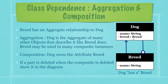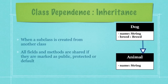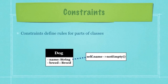The final level of dependence is inheritance, which represents a very tightly coupled relationship. Here we have a subclass named dog created from the animal superclass. Whenever we create subclasses, all fields and methods are shared between them — provided those fields and methods are marked as public, protected, or default.